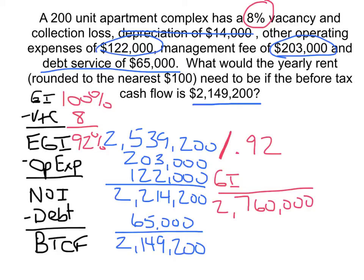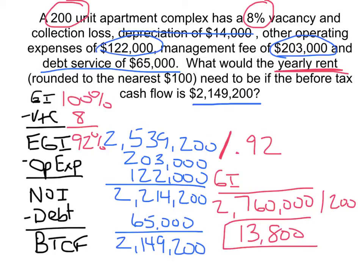There are 200 units in the complex and the question is asking for the yearly rent. So we divide $2,760,000 by 200 units and get $13,800 as the yearly rent per unit. Keep in mind they might try to trip you up by asking for monthly rent instead — in that case, just divide $13,800 by 12 to get that answer.